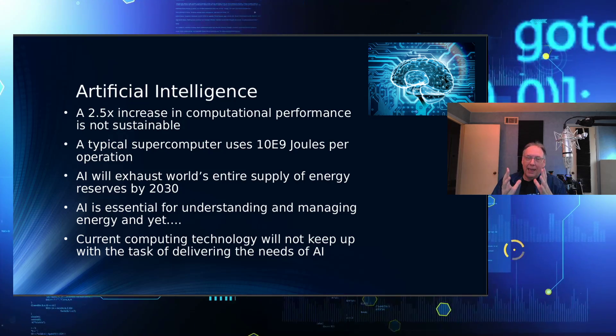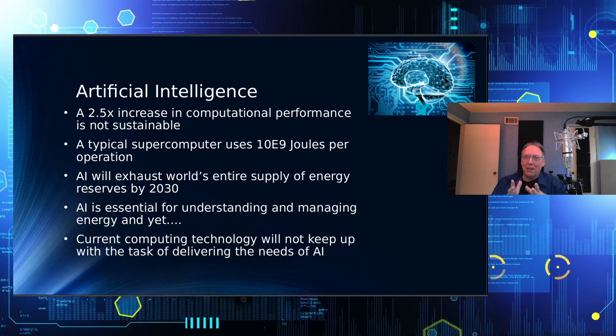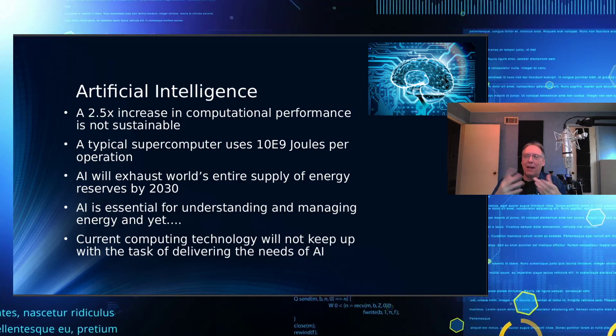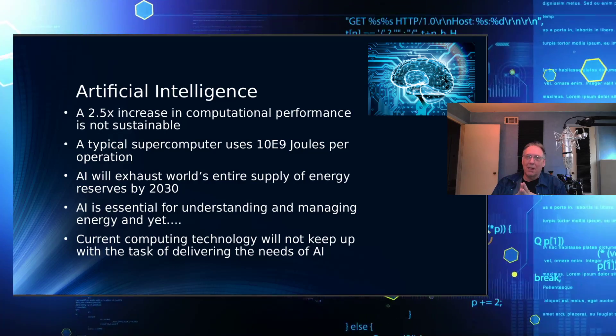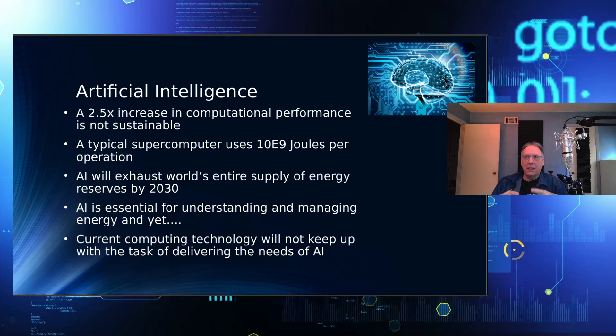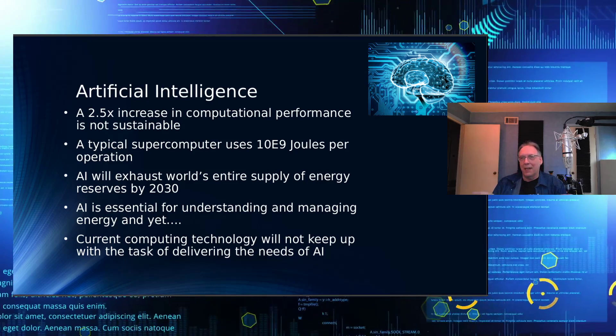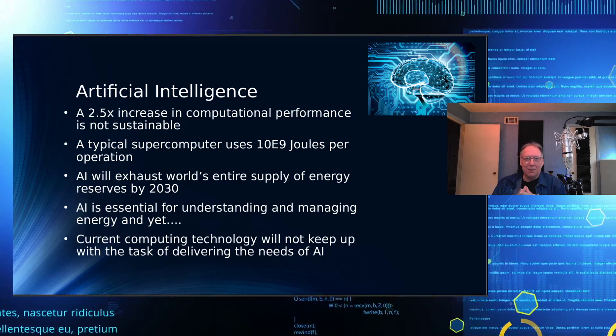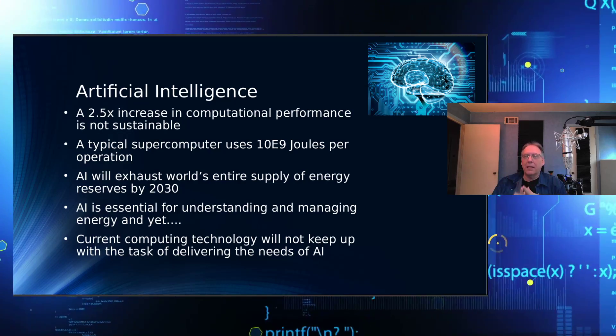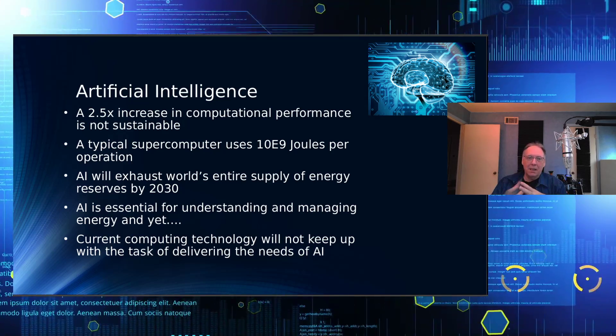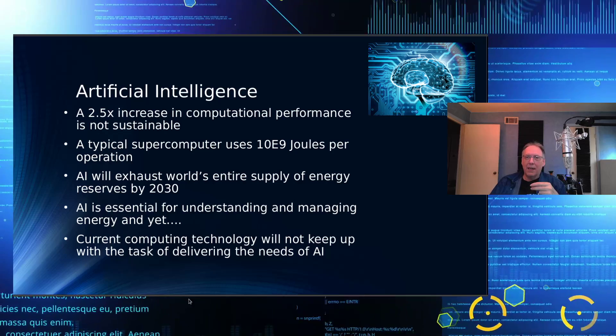And AI is ascending. The irony is, AI is being used to understand the impact of energy consumption on the planet. So on the one hand, you have AI trying to manage energy, and on the other hand, you have AI using up all the energy. So it's clear that the computing technology that we have right now is just not up to the task of delivering the needs for AI.